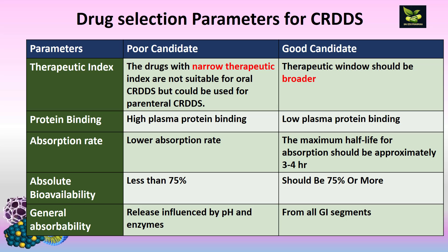If any drug has high protein binding, very little free drug will be available, so the drug should have low plasma protein binding to be taken for controlled release. The maximum half-life for absorption should be approximately 3 to 4 hours for a good candidate; a lower absorption rate disqualifies a drug. Absolute bioavailability should generally be near 100%, but more than 75% is considered acceptable. Finally, general absorbability: absorption should not be influenced by pH or enzymes, and there should be uniformity in absorption from all segments of the GIT.